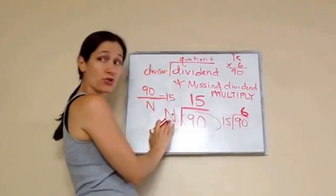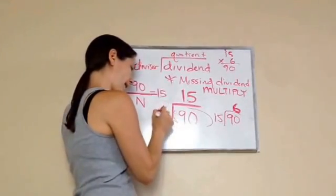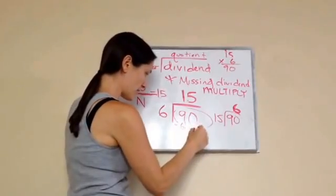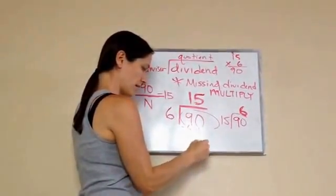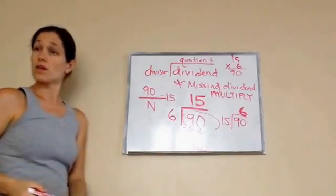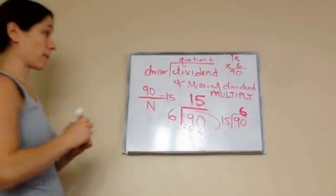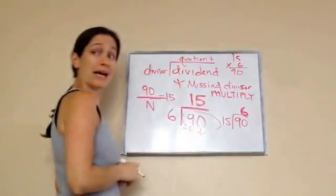So, let's try that. Does n equal 6? Let's try it. So, now I'll go 6 times 1 is 6. Bring down my 0. 6 times 5 is 30. And I know I'm done. Good.